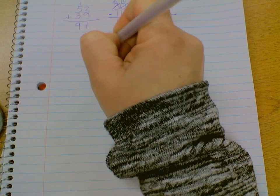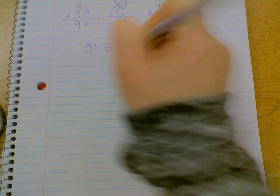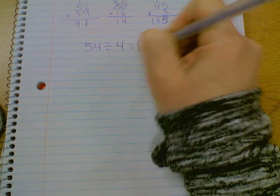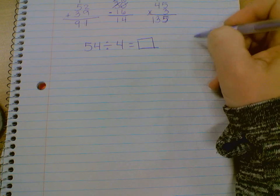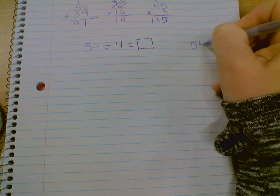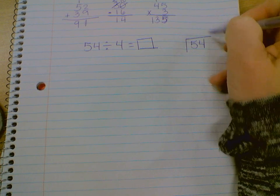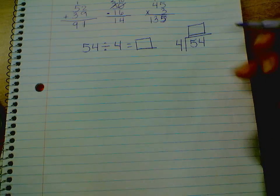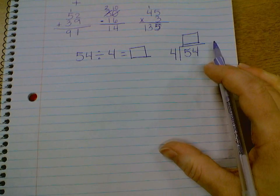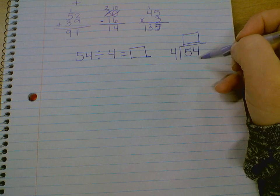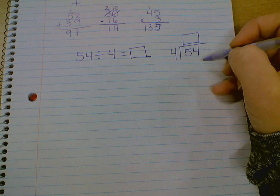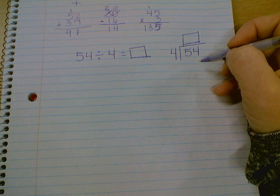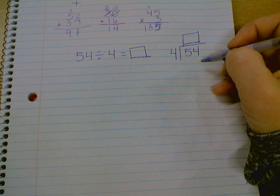We're going to solve 54 divided by 4 and find our quotient. We know that that can also be written as 4 divided into 54, and find our quotient. Now, we are going to use some key vocabulary words here: dividend, quotient which we already know, and divisor.